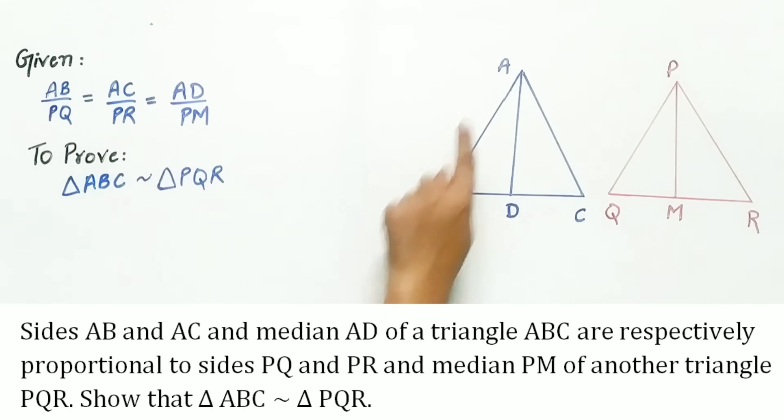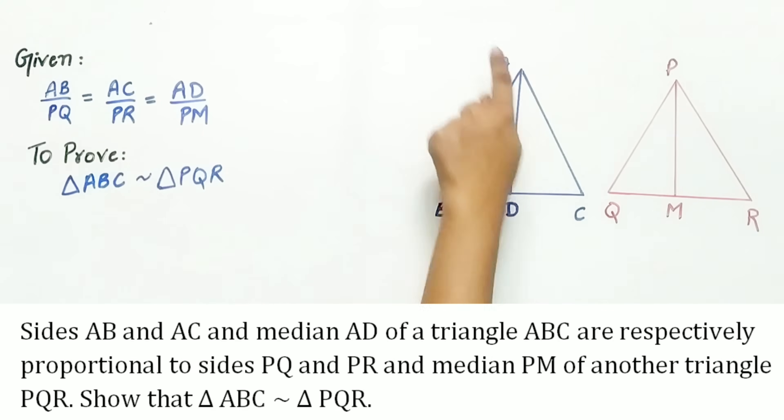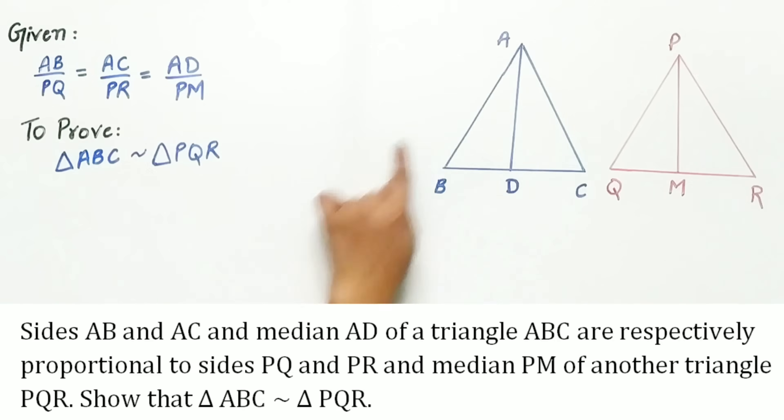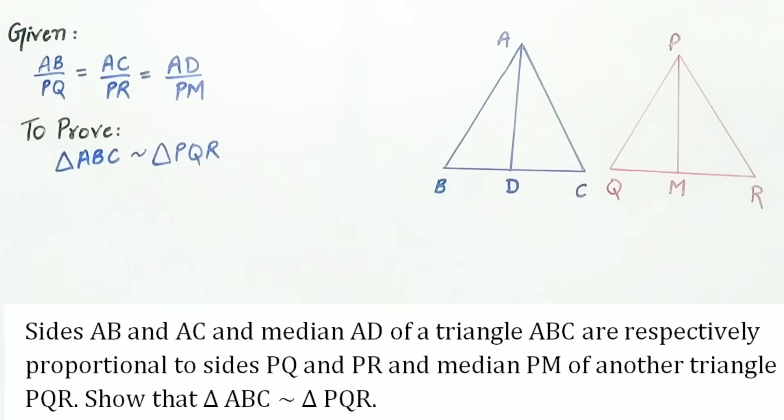sides AB and AC and median AD of a triangle ABC are respectively proportional to sides PQ, PR and median PM of another triangle PQR. Show that triangle ABC is similar to triangle PQR.